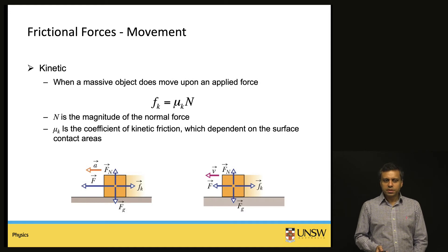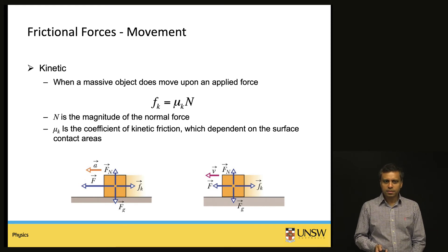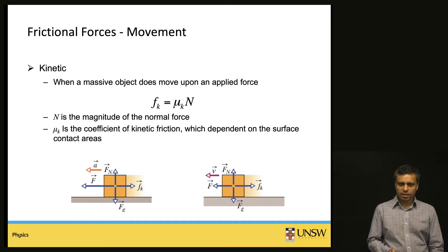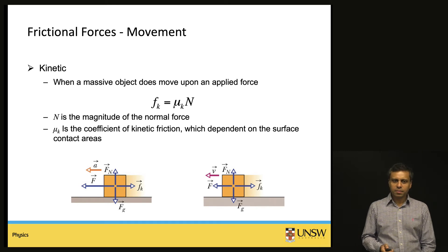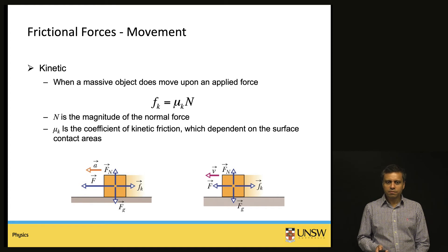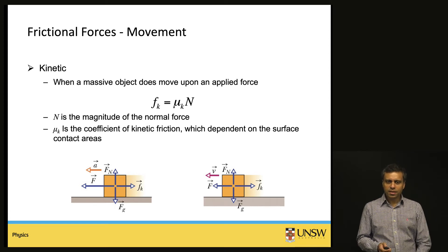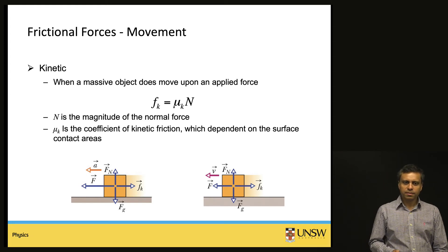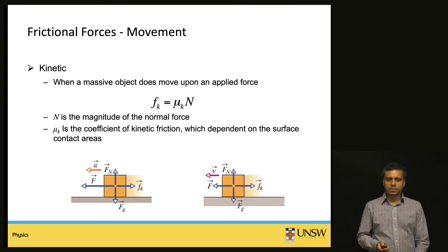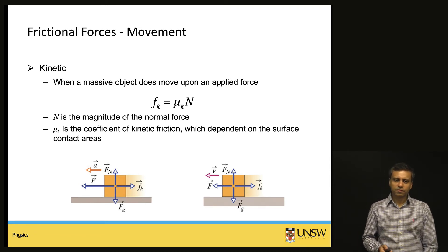The other type of frictional force is kinetic friction, given by the coefficient μk — the coefficient of kinetic friction — multiplied by the normal force N. The higher the normal force, the larger the kinetic friction. μk is different from μs and is again a property of the surface and the contact region. If μk is smaller, it is easier for the object to slide; if it is larger, you must apply a greater force to keep the object in motion.